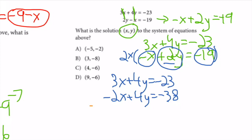This is where the term 'elimination' comes from — I'm getting rid of those y's. To do that I subtract the two equations term by term. That's why I wanted to line them up at the beginning.